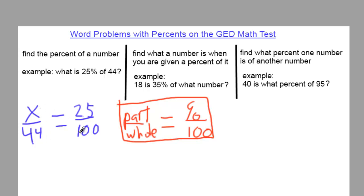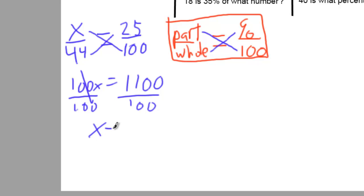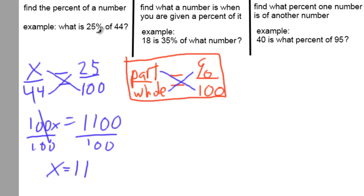Now solve for x by multiplying diagonally. Multiply x by 100 and multiply 44 by 25: 100x = 44 × 25 = 1100. To get x by itself, do the opposite operation — divide both sides by 100. So x = 1100 ÷ 100 = 11. So what is 25% of 44? 11 is 25% of 44.